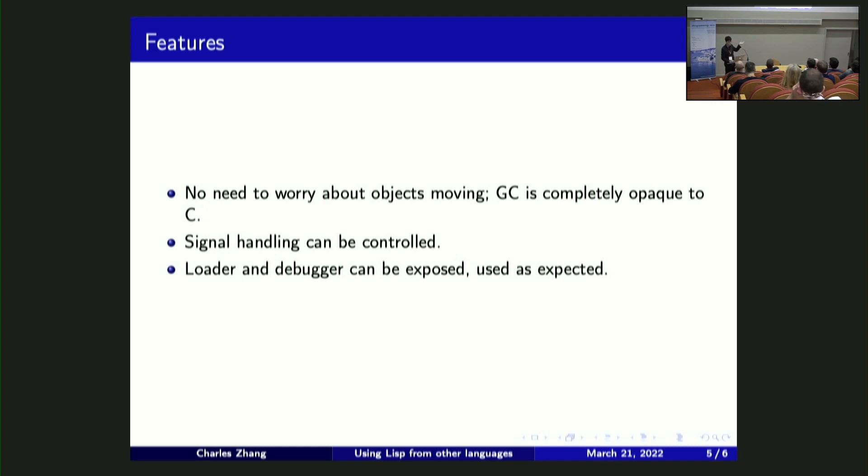You can even expose the loader and the debugger so you can load in more new Lisp code at runtime from your C program or from Python if you need it. Just load in a FASL. And even if you are worried about, okay, I'm writing this code to use my super cool Lisp library and then there's like an error and I have no idea what's happened, you can actually go in and say I'm just going to turn on the debugger in SBCL and then when there's an error on the Lisp code, just drop into the debugger for me. So you have some knobs you can turn to try and control that.